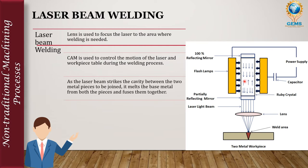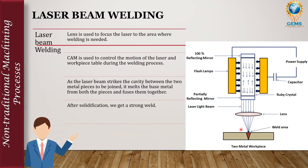As the laser beam strikes the cavity — the small space between the two work pieces — it melts the base metal from both pieces using the high temperatures produced by the laser light. The two molten materials fuse together, and after solidification we get a strong weld.